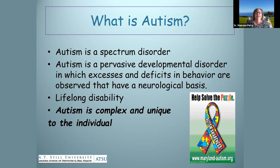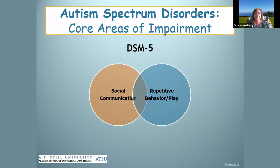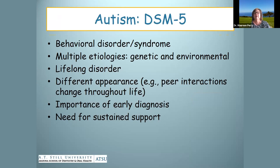So what is autism? It's a spectrum disorder — a pervasive developmental disorder where people have excesses and deficits in behavior. It's neurological, lifelong, complex, and extremely unique to every individual. According to the American Psychological Association's DSM-5, there are two areas of impairment: social communication issues, and repetitive behavior and play issues. It's a behavioral disorder with multiple etiologies — genetic and environmental — and most people will need sustained support in some aspect of their lives.